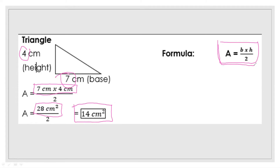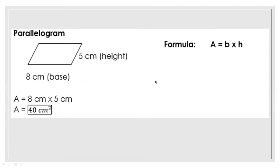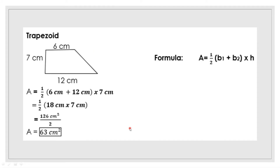For a triangle, multiply base by height then divide by 2. Next polygon is the parallelogram. It is similar to the rectangle, but the formula uses base times height — whereas rectangle uses length times width. We multiply the base, which is 8 centimeters, by the height, which is 5 centimeters, and the area is 40 square centimeters.